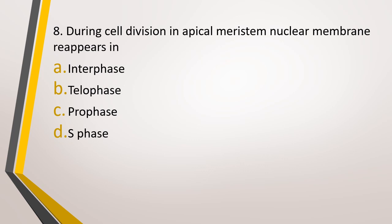Question number 8. During cell division in apical meristem, nuclear membrane reappears in, option A: interphase, option B: telophase, option C: prophase, or option D: S phase. In which stage of cell division does the nuclear membrane reappear? The correct answer is option B, that is telophase.